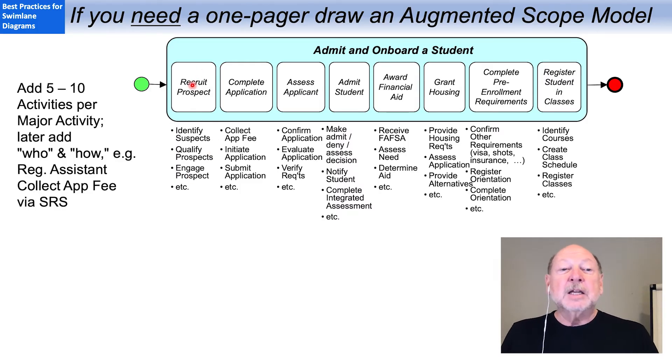So what we do here is a form of decomposition. We add more detailed activities under the major phases or activities of the process. Initially, just in verb noun form, later adding the who and the how, as I've indicated here.